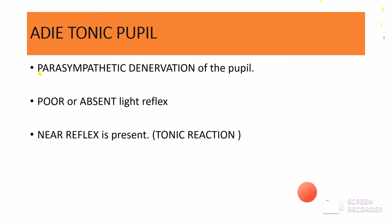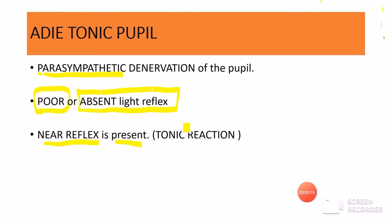The Adie's tonic pupil is essentially a problem in the parasympathetic nervous supply of the pupil. Therefore, the light reflex in the Adie's tonic pupil is either absent or the pupil will react very sluggishly to light. However, the near reflex is preserved — it is present and usually it is a tonic reaction of the pupil. Normally the pupil reacts briskly and quickly to light and also in the near reflex pathway, but in case of Adie's tonic pupil, the reaction is slow and tonic — therefore it is called Adie's tonic pupil.